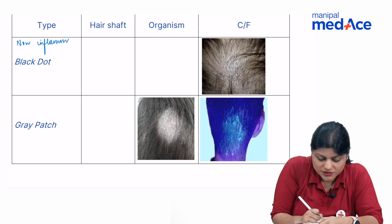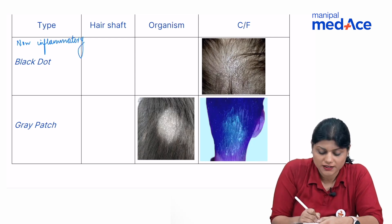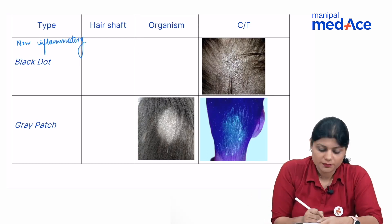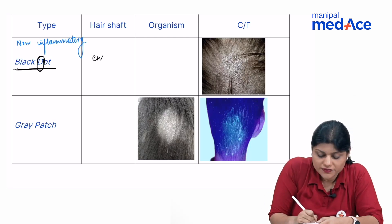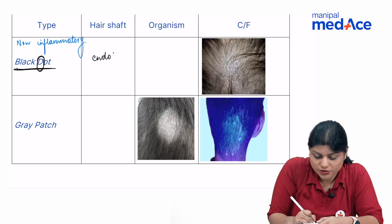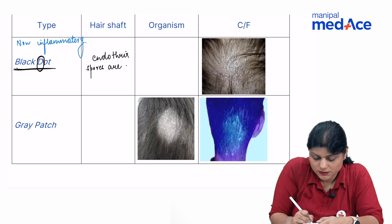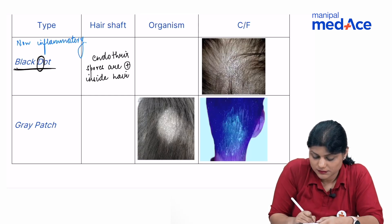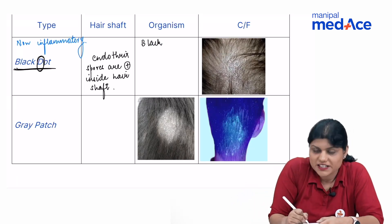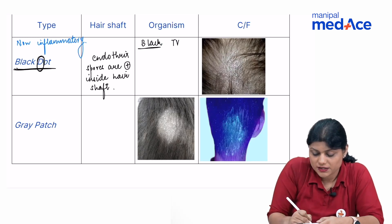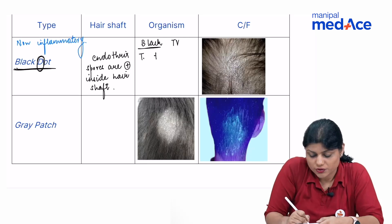In non-inflammatory tinea capitis, we have black dot and grey patch. In black dot, the hair shaft involved is endothrix — the spores are present inside the hair shaft. Black dot is caused by Trichophyton tonsurans. Remember: black dot, black TV — Trichophyton tonsurans.